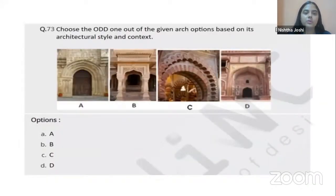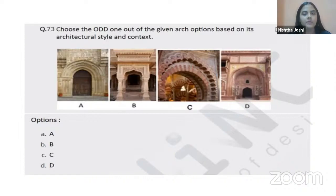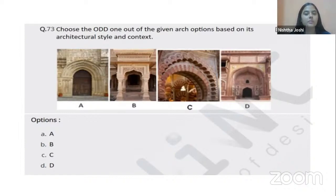Next question: choose the odd one out from the given architectural arch options based on architectural style and context. Four images of different arch types are given. Many such questions come in both JEE Paper 2 and NATA. When images are provided, it becomes very easy to deduce the answer, even if the question initially appears tough or confusing.